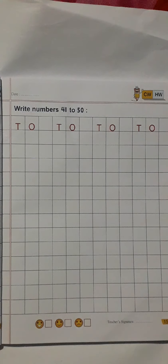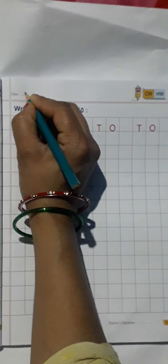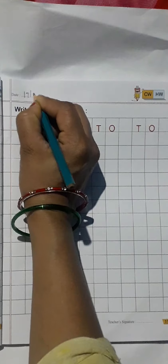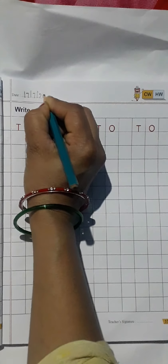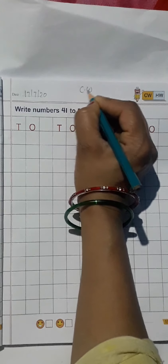So first of all, write the date: 17/7/20. Okay, now write the CW. Yes, CW.